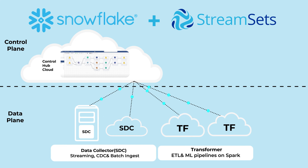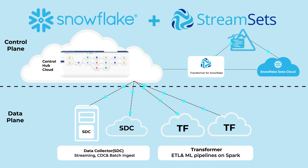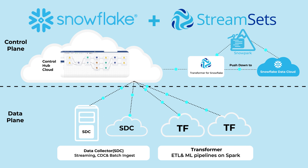The Data Collector Engine uses the compute that you provide. The Transformer Engine leverages a Spark cluster. What we are adding to this mix is a Snowpark hosted service, which is a StreamSets engine — Transformer for Snowflake. This service is available in the cloud as a self-service, using the same interface as StreamSets for building and designing pipelines, and it will allow you to design and run pipelines directly on the Snowflake Data Cloud, thanks to the Snowpark libraries.